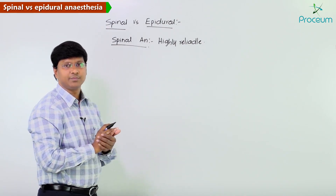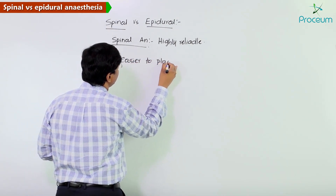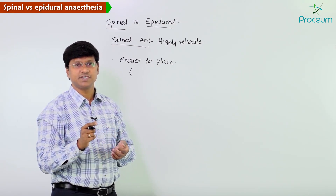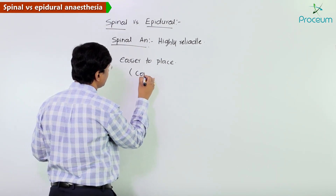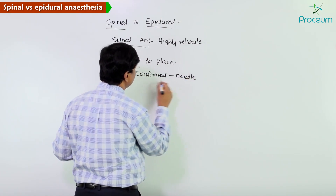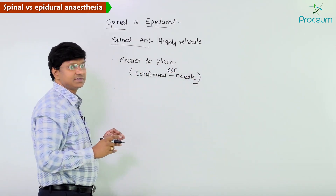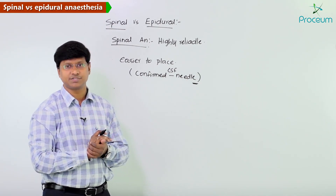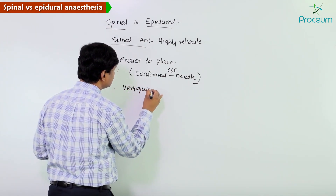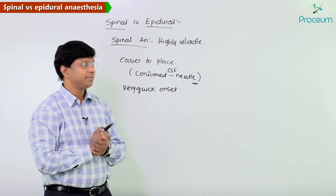It is easier to place the needle, and we can confirm the needle is in the subarachnoid space by the presence of CSF coming back through the needle. If CSF is coming through the needle, it tells us the needle is in the subarachnoid space. The other advantage is that spinal anesthesia has a very quick onset of action.